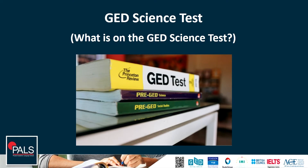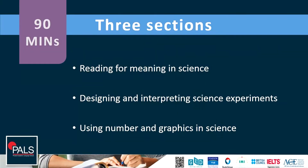Hello everyone and welcome to Book It Pals. In today's video, we're going to talk about what is on the GED Science Test. The GED Science Test consists of three sections in 90 minutes. This requires your ability in reading for meaning in science, designing and interpreting science experiments, and using numbers or graphics in science.